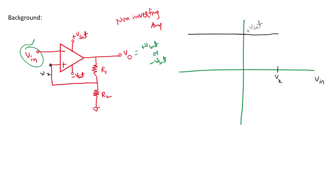When V_in is greater than Vx, the negative terminal voltage exceeds the positive terminal voltage, which drives the output voltage to minus Vsat.